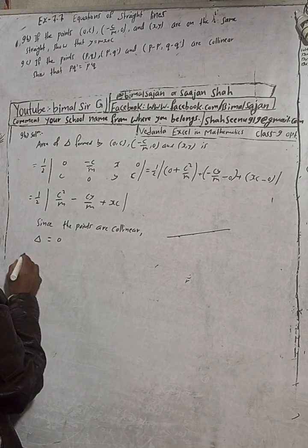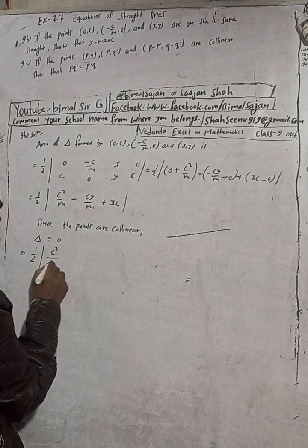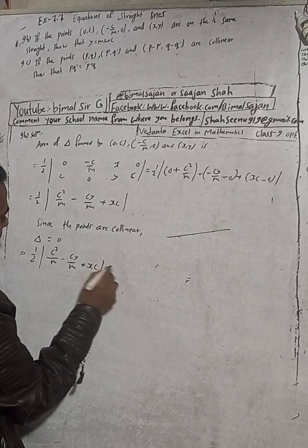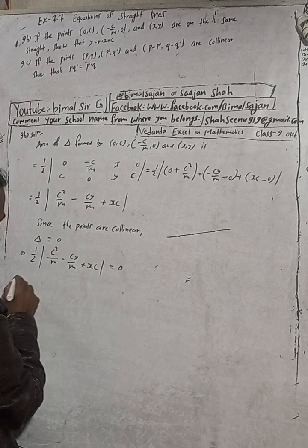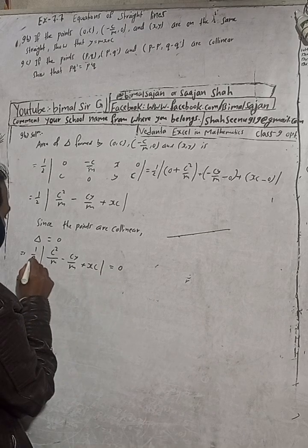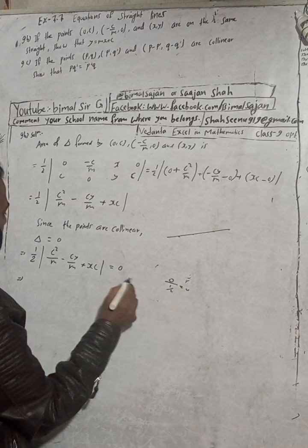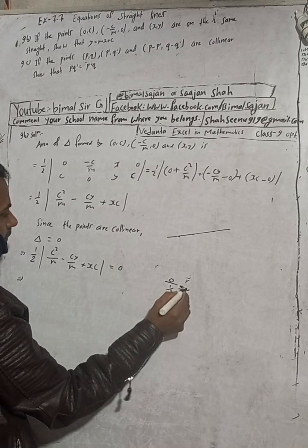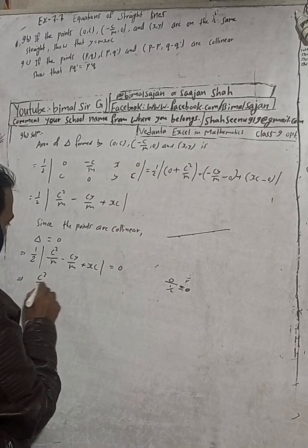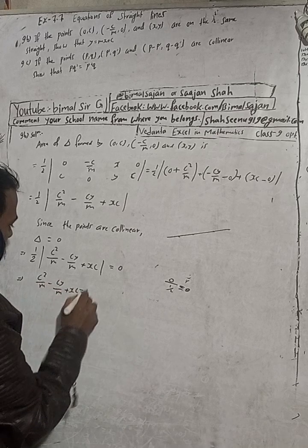Collinear means all three points are lying on the same line. Since the points are collinear, the area of triangle equals zero. So this implies one-half times [C²/m - Cy/m + mxC] equals zero.